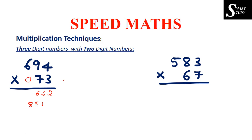Moving on to the fourth step: cross multiplication of tens places with hundreds places. So 6 into 7 is 42, and 9 into 0 is 0. So the result is 42. Adding the carry of 8, we get 50. So 0 goes in the answer and 5 gets carried forward.